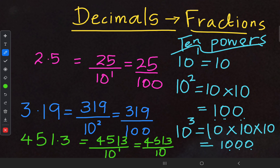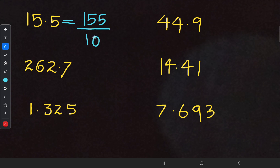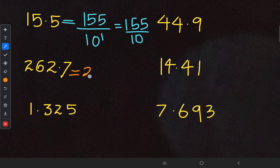For 15.5: write the numerical value 155, and there is one digit after the decimal point, so 10 to the power of 1 — that is 155 upon 10. For the next one, 26.27: there is one digit after the decimal point, giving us 2627 upon 10.